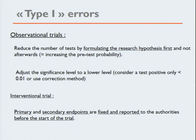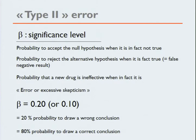Let's go to type 2 errors. This is what we call the beta significance level — it's the probability to accept the null hypothesis when in fact it is not true, or in better words, the probability that a new drug is ineffective when in fact it is effective. It's an error of excessive skepticism. This is most often set at the 20% level — 20% probability to draw a wrong conclusion, or 80% probability to draw a correct conclusion. This is what we call the power.